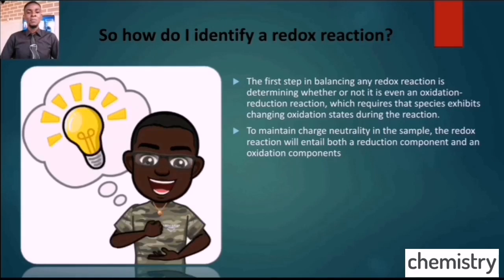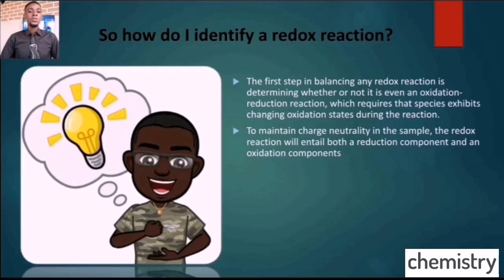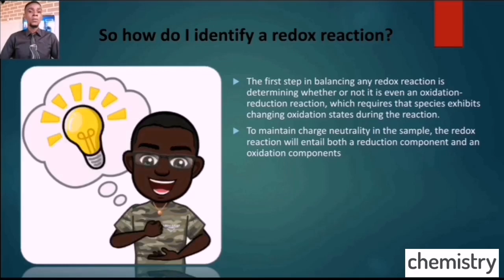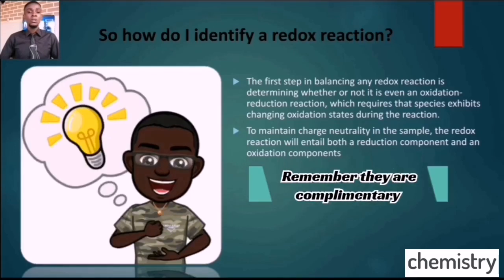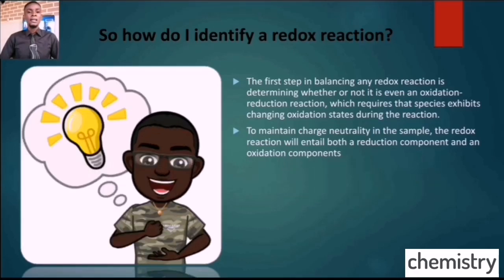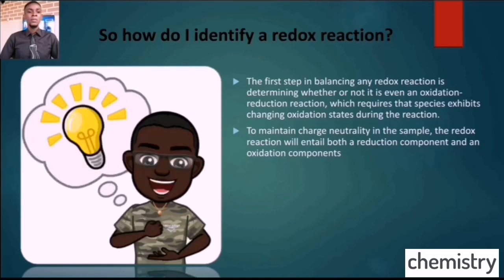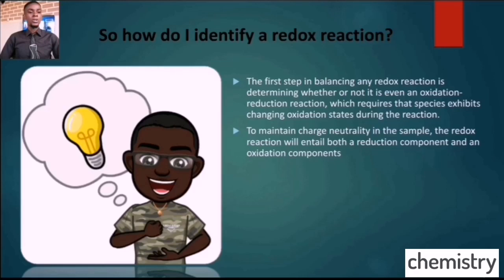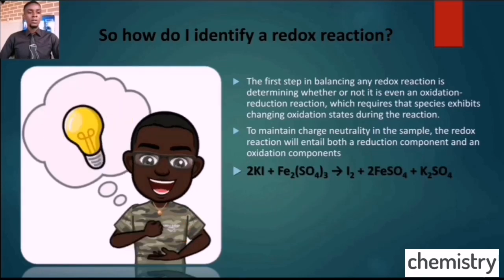Remember, in our last topic we discussed that reduction and oxidation are complementary processes. Because if one species is losing — whether electron, oxygen, or hydrogen — there should be another species that is gaining those entities. So let's look at a chemical equation and identify if it's a Redox Reaction.